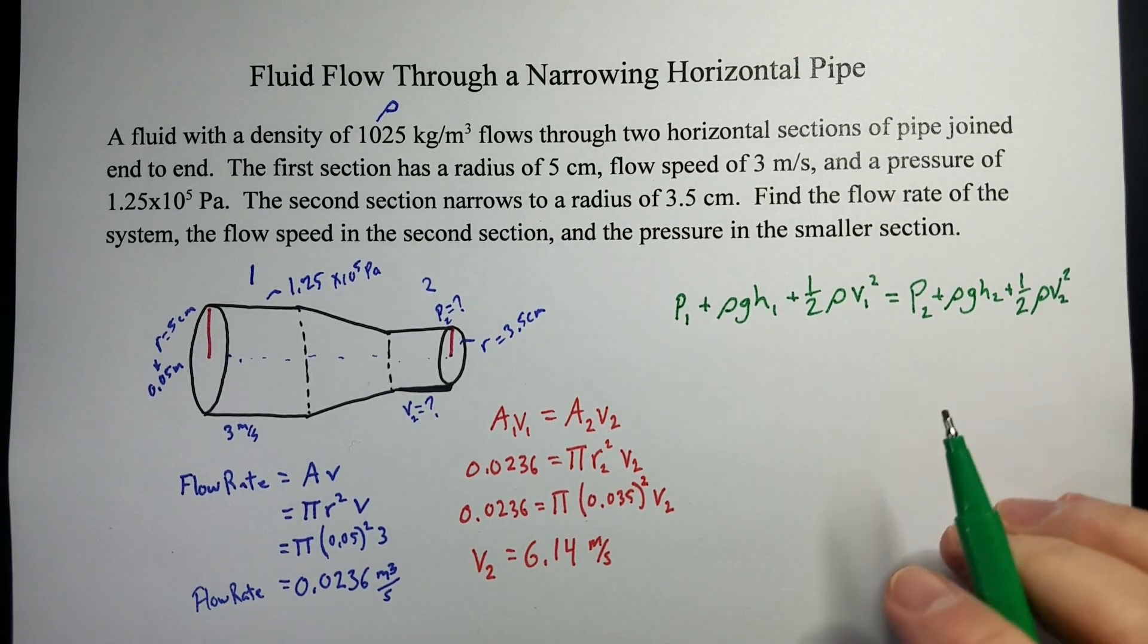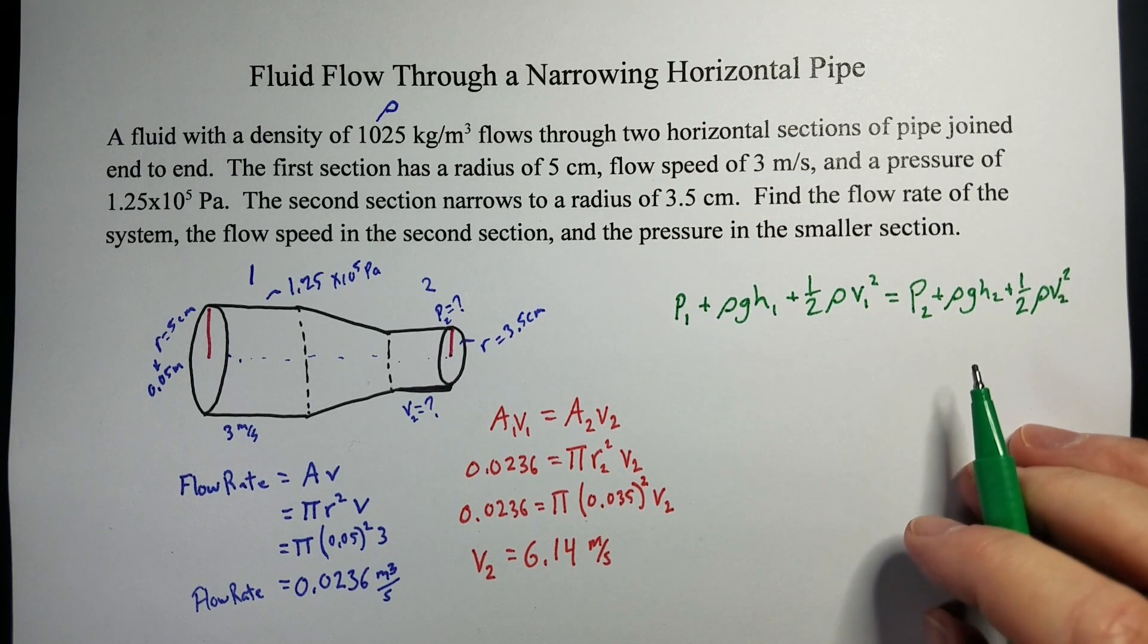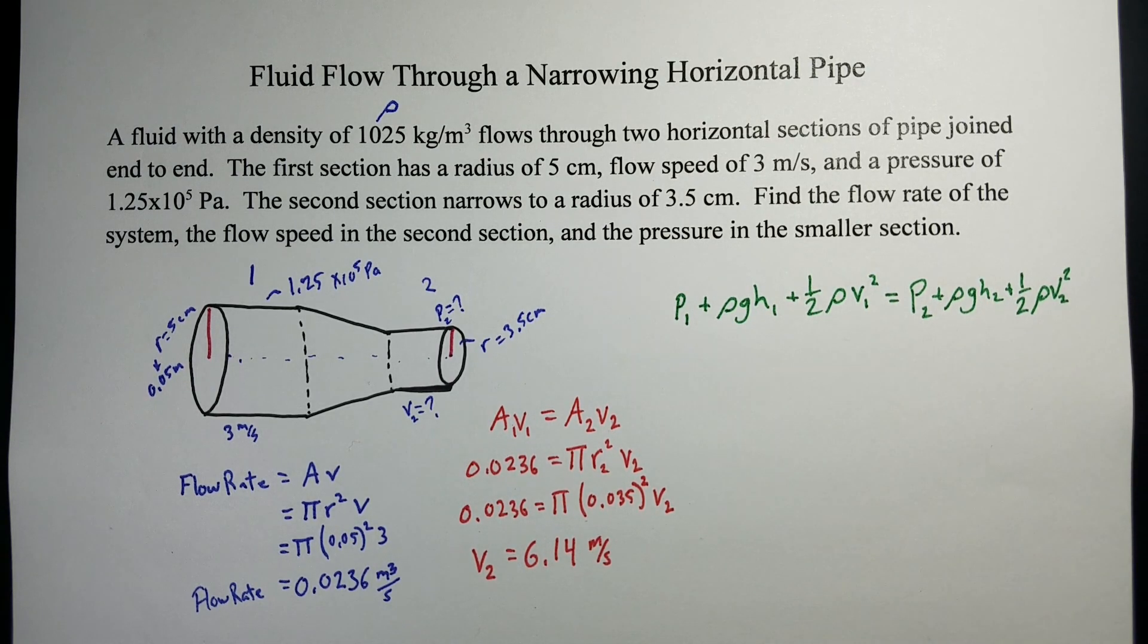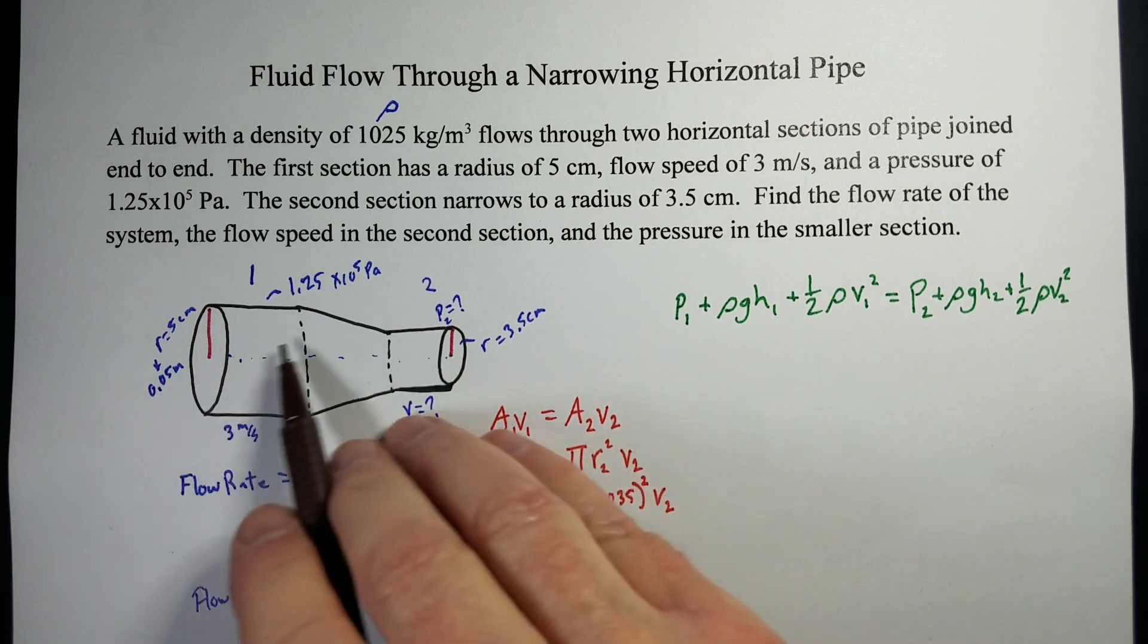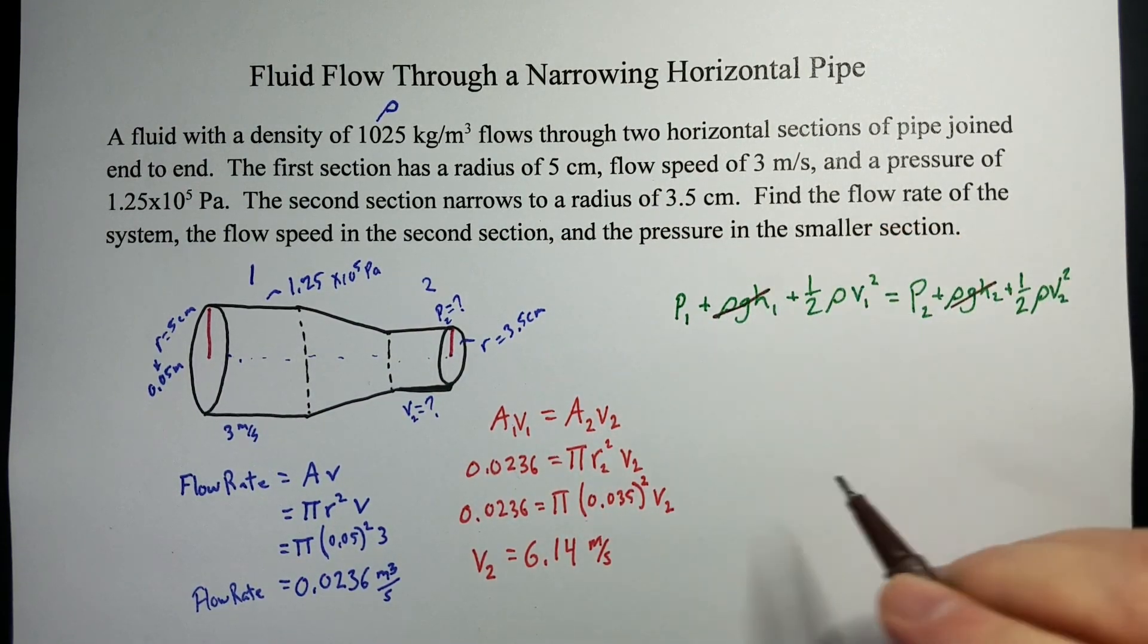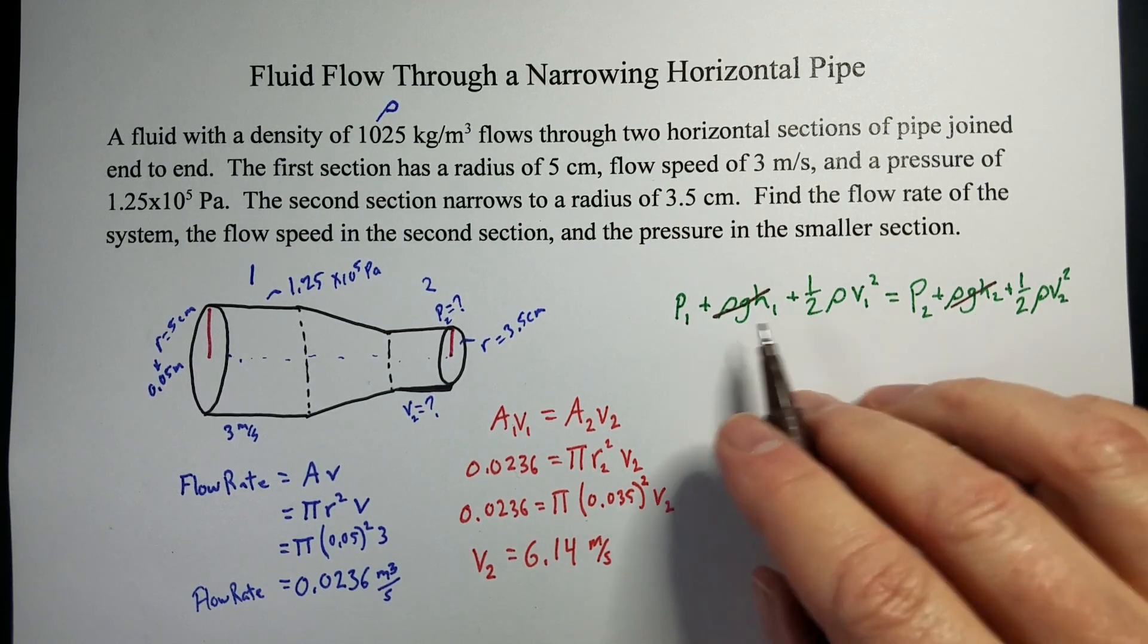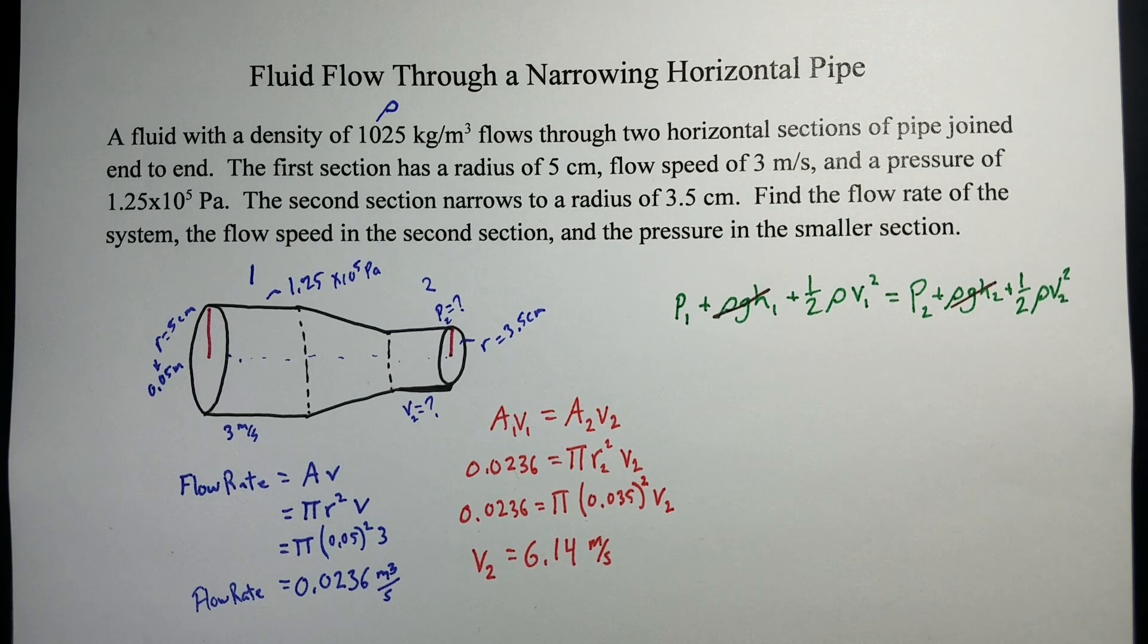So, I'm going to first do what I can algebraically, which is not much in this case. As we look through, the only thing we can really get rid of are these heights. Since it stays at the same height, the pipe just narrows, that term and that term can cancel out because the heights do not change. That's the same number on both sides, but that's really the only thing we can do.